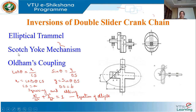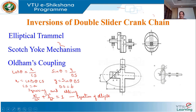The scotch yoke mechanism is also one of the inversions of the double slider crank mechanism. It converts rotary motion into reciprocating motion. Like the double slider crank mechanism, it also has two sliding pairs and two turning pairs.